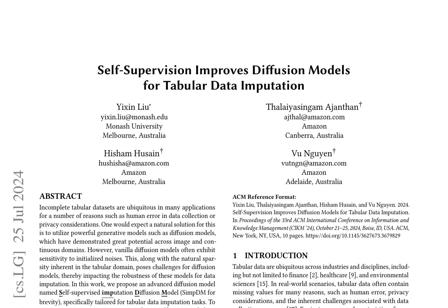The paper addresses the issue of missing values in tabular data, a ubiquitous problem across industries, and proposes an advanced diffusion model called Self-supervised Imputation Diffusion Model, SIMP-DM. It identifies two key mismatches — objective mismatch and data scale mismatch — that hinder the performance of existing deep generative models in imputation tasks.